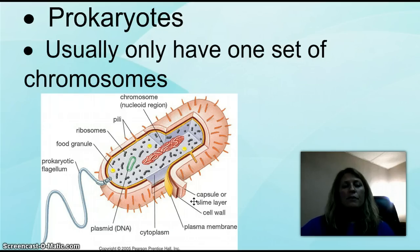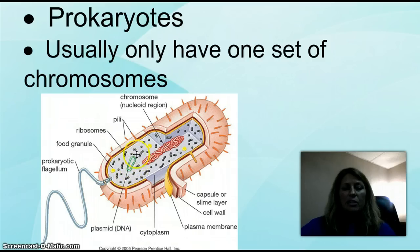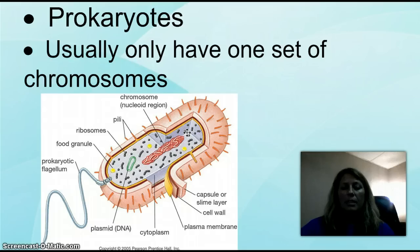Prokaryotes usually only have one set of chromosomes — this would be an example of bacteria. You can see a mass in the middle called a nucleoid. Notice it does not have a membrane. It also has something separate called a plasmid, which is DNA. Because it does not have a membrane, when you get a cut it can generate into an infection quickly because bacteria can replicate so quickly.